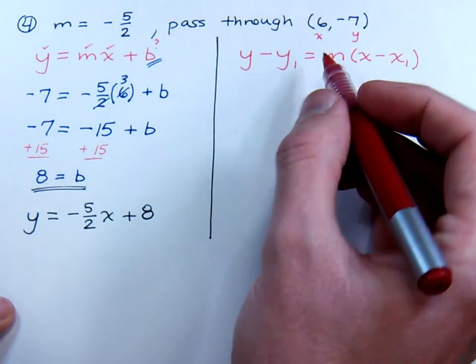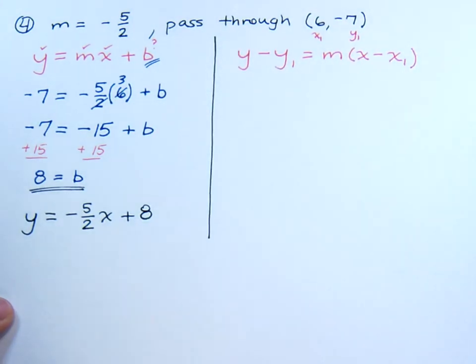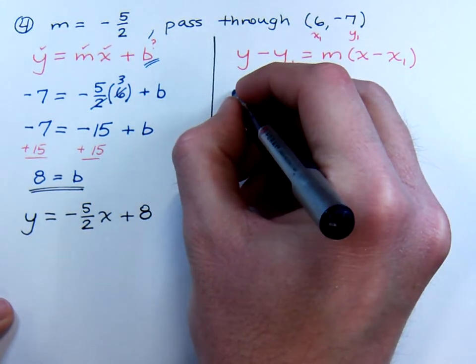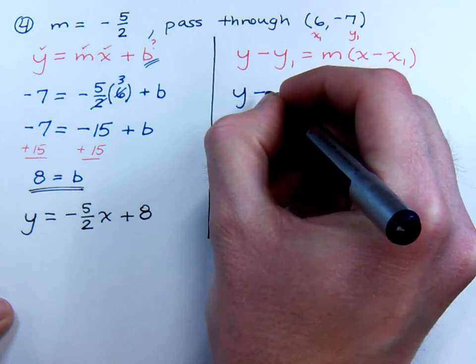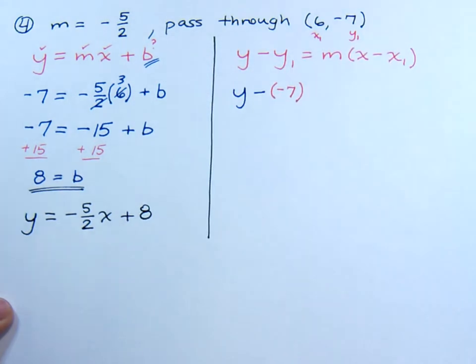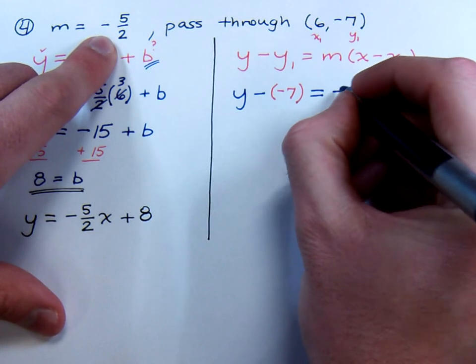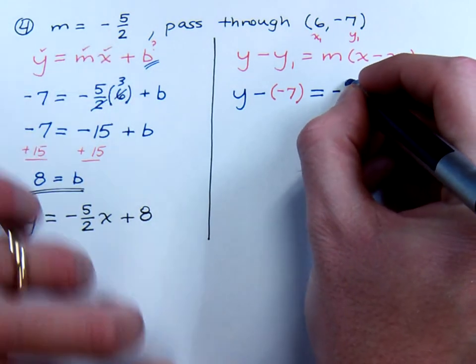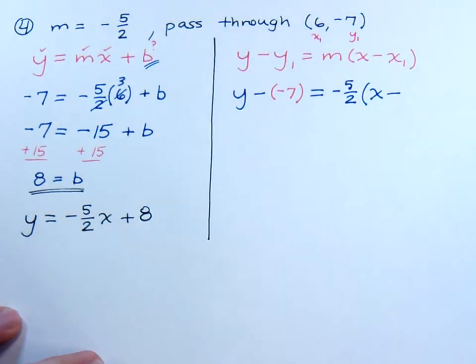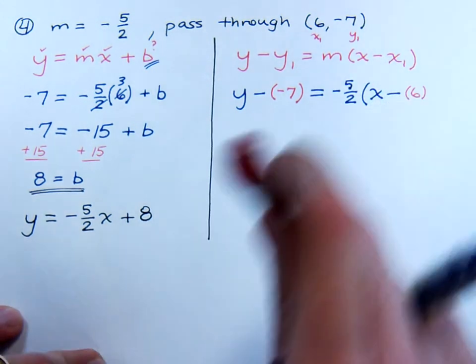So here's the point-slope formula. We're going to be using this as our x1 and this as our y1. We're just going to plug it in. So let's see what this guy looks like. y minus, you've got a negative 7 here. So make sure you use those parentheses correctly. y minus a negative 7 equals my slope, which is negative 5 halves, times x minus, we're plugging in the x1, so that's x minus 6.